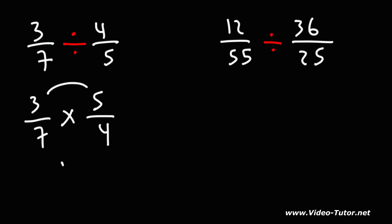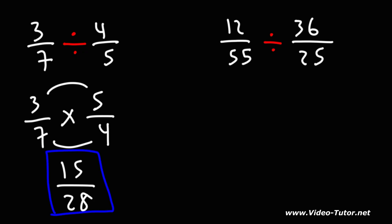3 times 5 is 15, and 7 times 4 is 28. So the answer is simply 15 over 28.